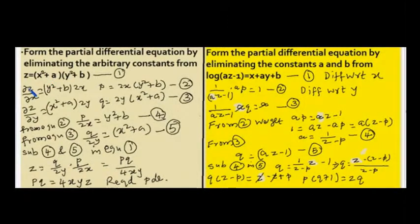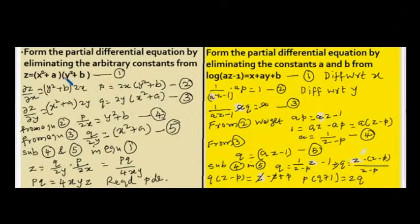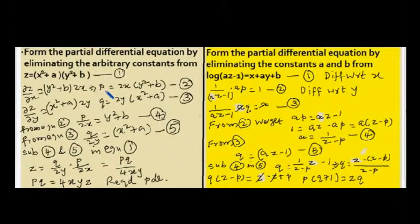Procedurally, we have to differentiate with respect to x and y. First, we shall differentiate the given equation with respect to x. It is dou z by dou x. On the right hand side there are two terms: one is x squared plus a, another one is y squared plus b. When differentiating with respect to x, all other variables are treated as constants, so y squared plus b is a constant. The differentiation of x squared plus a gives 2x, and the differentiation of a is 0. So it is (y squared plus b) into 2x. This is p, so p equals 2x into (y squared plus b). This is equation number two.